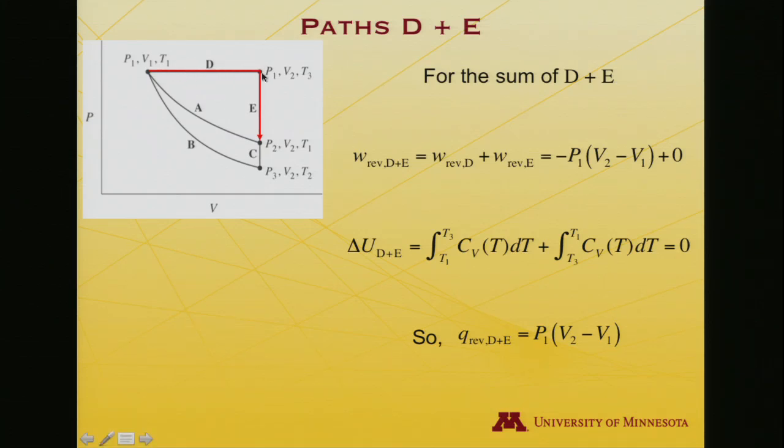So path D is an expansion at constant pressure. So that's like a constant external pressure. That's an easy one to evaluate. So the work along path D is -P_external, it's P1 is the name of it in this case, V2 minus V1. And along path E, the volume does not change. If delta V is zero, then the work is zero. So this is the total work for paths D and E: -P1 times (V2 - V1).